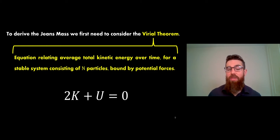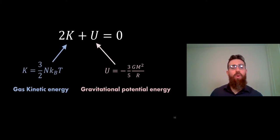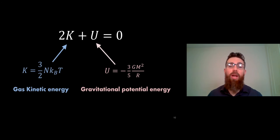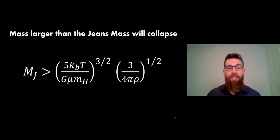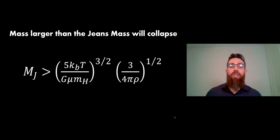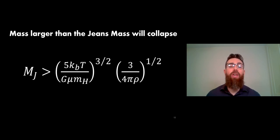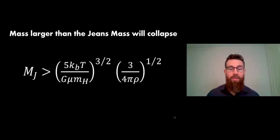We have expressions for those so we can substitute them in. On the left you've got the gas kinetic energy and then the gravitational potential energy. We want to work out M and R because those will be our Jeans radius and Jeans mass. I'm not going to do the full derivation here - I've got other videos which go through those derivations in full - but if you do all of that and rearrange it, you get an expression for the Jeans mass. In that expression you've only got two variables: T (temperature of the cloud) and ρ (density).